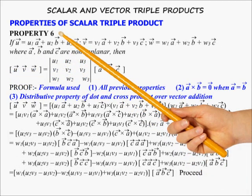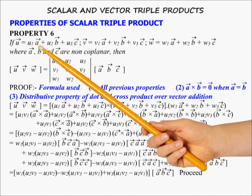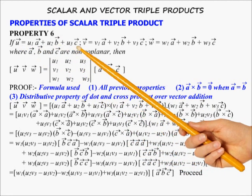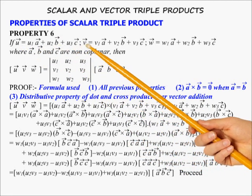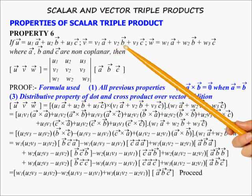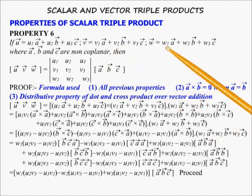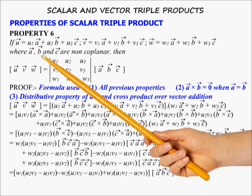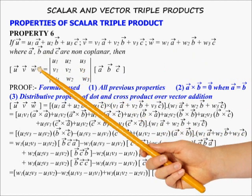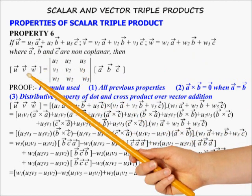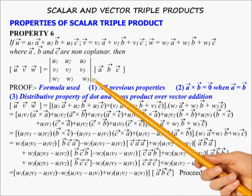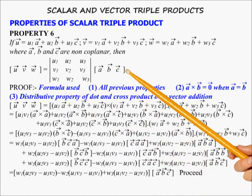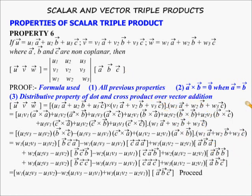Property 6: If vector u = u1·a + u2·b + u3·c, vector v = v1·a + v2·b + v3·c, and vector w = w1·a + w2·b + w3·c, where a, b and c are non-coplanar vectors, then the scalar triple product [u, v, w] is equal to the determinant of the coefficient matrix multiplied by the scalar triple product [a, b, c]. This may be proved using properties already covered.